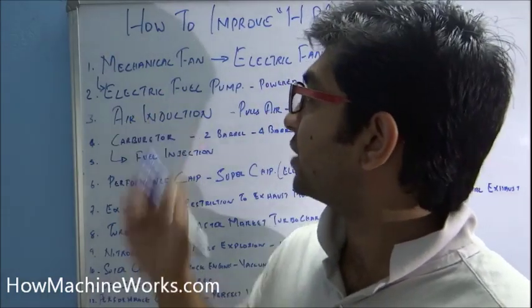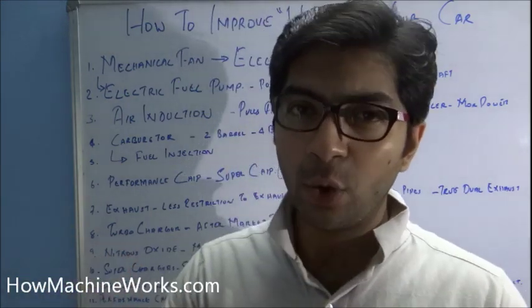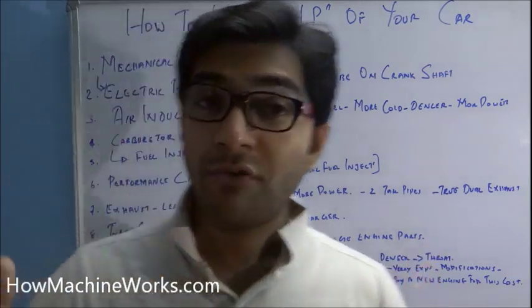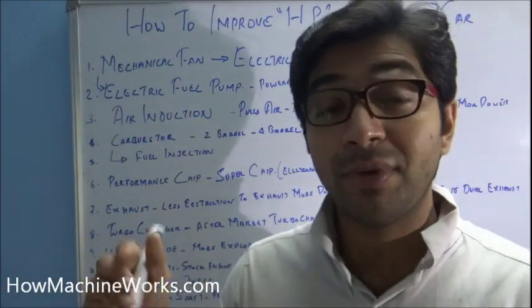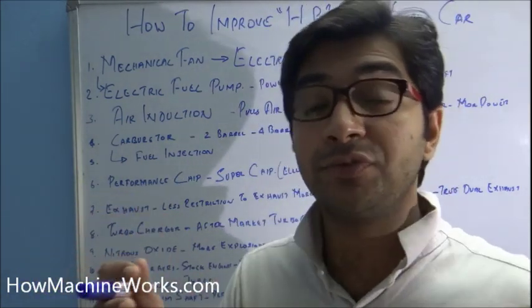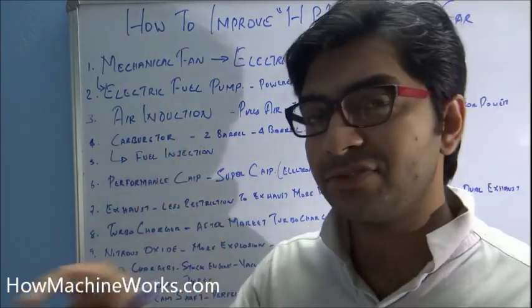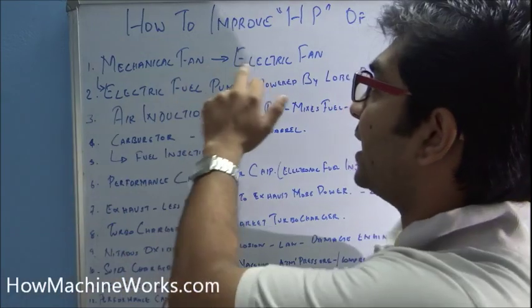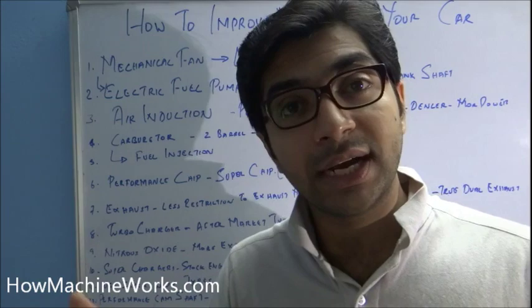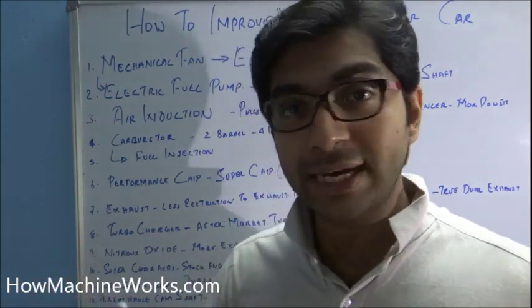The second tip is to use an electric fuel pump instead of a mechanical fuel pump. The mechanical fuel pump gets its drive through a lobe from the crankshaft, so that much HP is given by the crankshaft for powering it. An electric fuel pump gets its drive from the battery itself. If you're installing an electric fan and electric fuel pump, the load on the battery and alternator will be much more, so upgrade your battery and alternator.